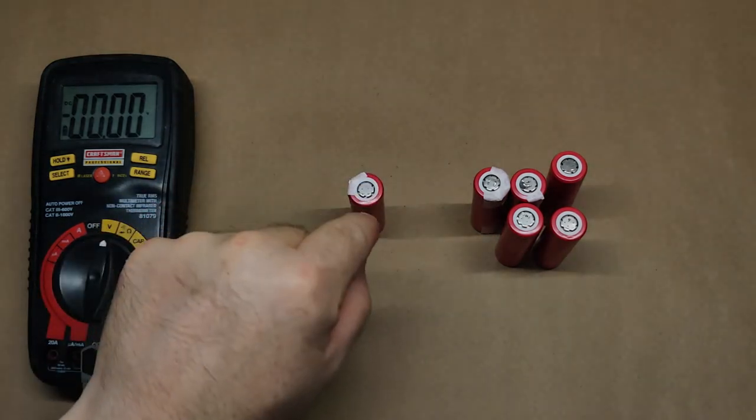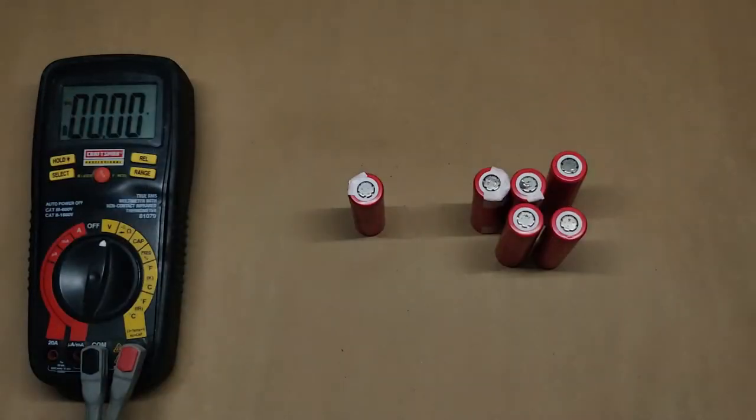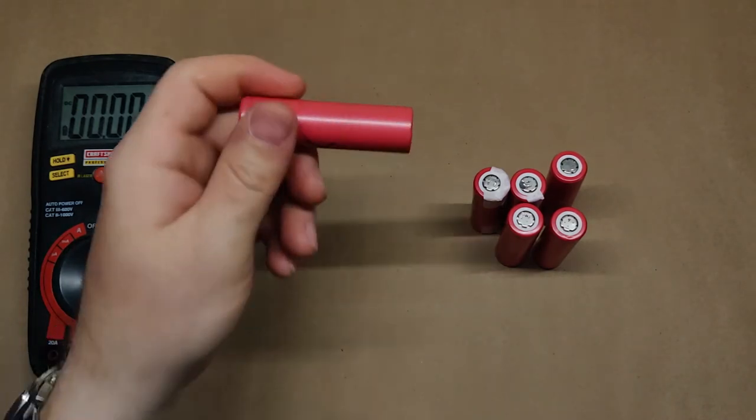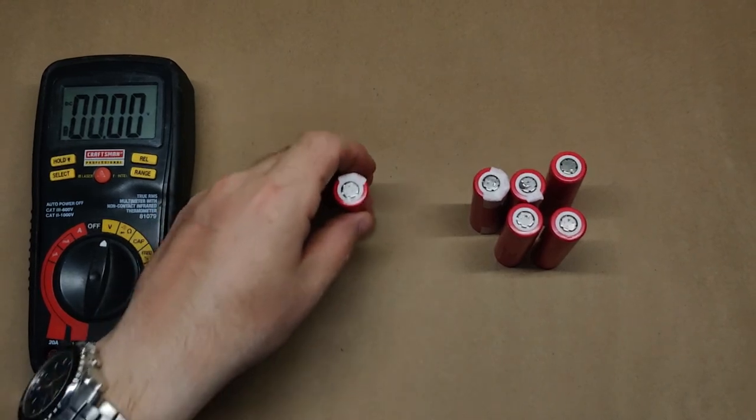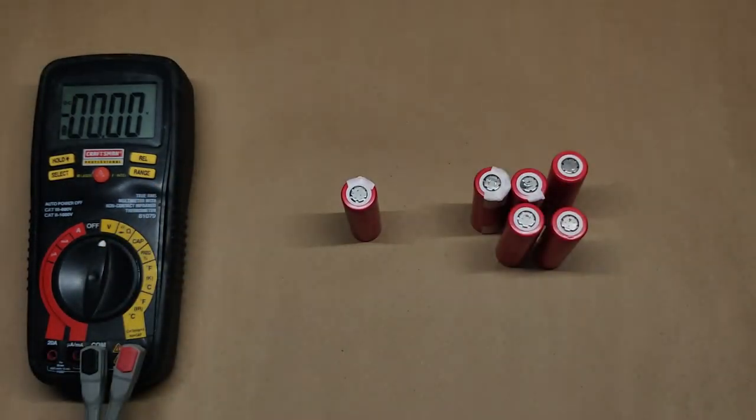So one bad cell took out, and when I say bad, I mean bad. This is as dead as a battery can get. But these five other cells are perfectly fine.